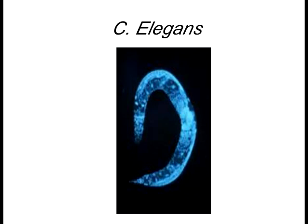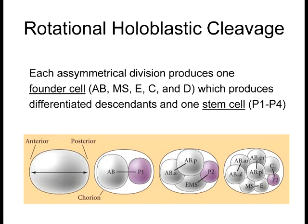C. elegans has a fascinating property: every individual develops with an exact, fixed number of cells — approximately 1,079 — counted every time, always the same. C. elegans has rotational holoblastic cleavage, similar to humans. After the very first cell division, cells are already pre-established autonomously to become germline cells, having the maternal components to do so. The mitotic spindle shifts position after each division — it shifts, the cells split, then shifts again — which is why it's called rotational holoblastic cleavage.